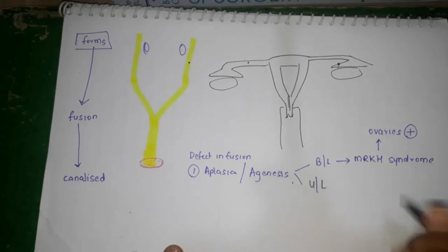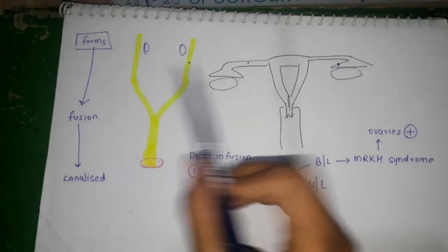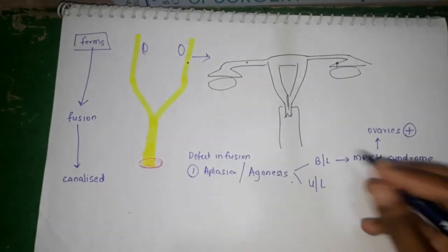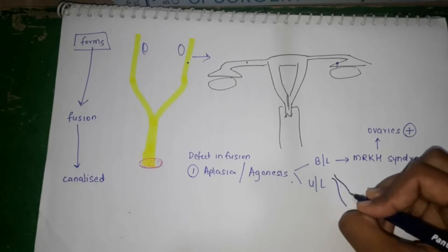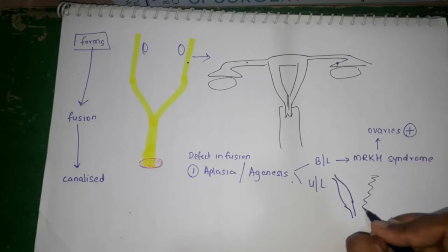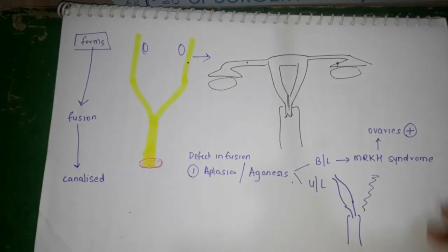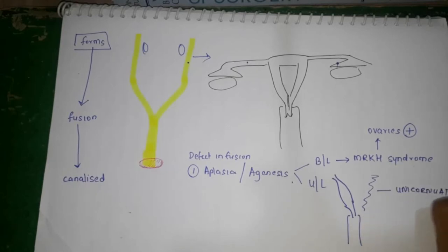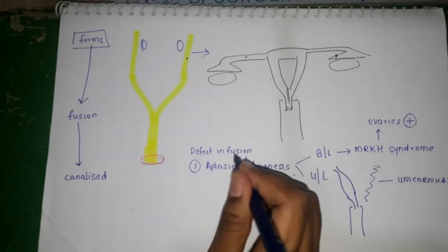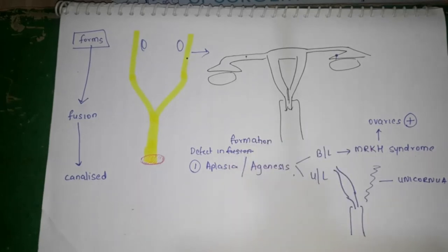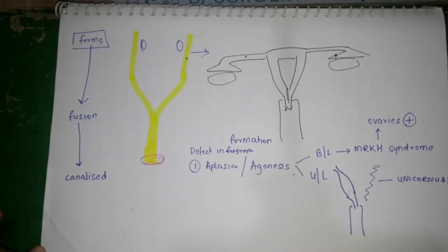If the formation defect happens unilaterally — one side is absent while the other is present — it forms what is called a unicornuate uterus. One side is empty and the other side combines with the lower one-third of the vagina, resulting in a single-horned uterine structure.